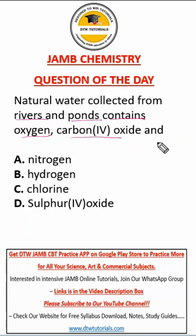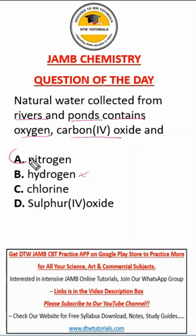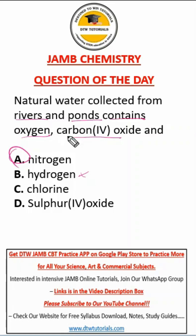...carbon dioxide, and — now, you might easily miss this question by picking hydrogen, because it's water, H2O, and when you see oxygen you just say hydrogen. No, no, no. The right answer here is nitrogen. Nitrogen is part of the natural composition of water bodies. As it is a major component of the atmosphere, it dissolves into water. So natural water collected from rivers and ponds contains oxygen, carbon dioxide, and nitrogen.